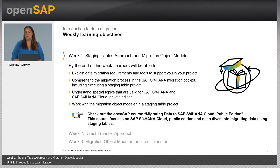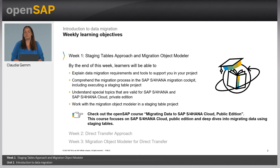Furthermore, you learn how to work with a migration object modeler in a staging project. One additional remark: please check also the openSAP course Migrating Data to SAP S/4HANA Cloud Public Edition. This course focuses on SAP S/4HANA Cloud Public Edition and provides deep dives into migrating data using the staging tables. In week two of this course, we will introduce the direct transfer approach in the SAP S/4HANA Migration Cockpit. And during the third week, you will learn the functionalities of the migration object modeler for this direct transfer. We have a big bunch of topics for you. Let's start.